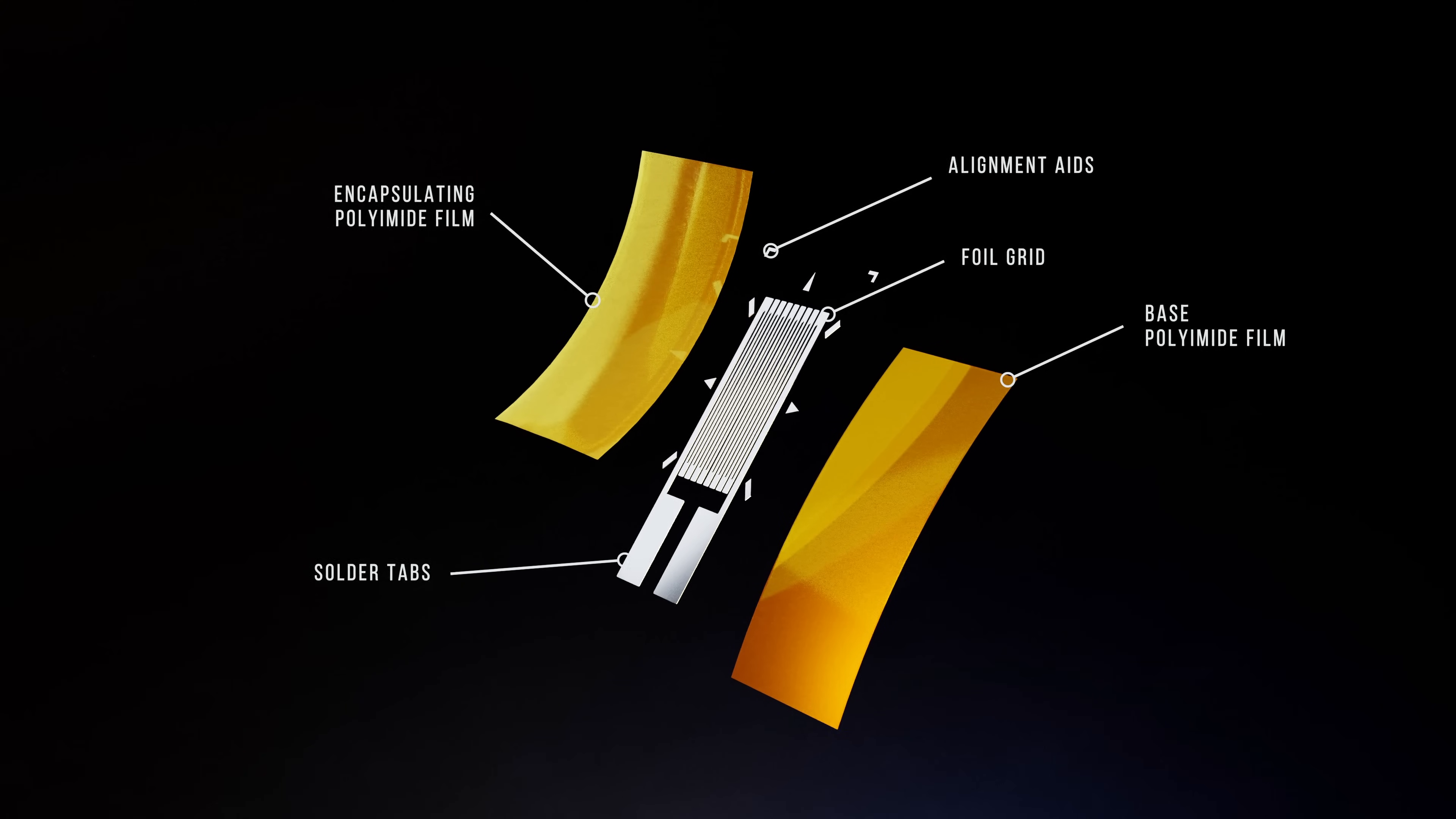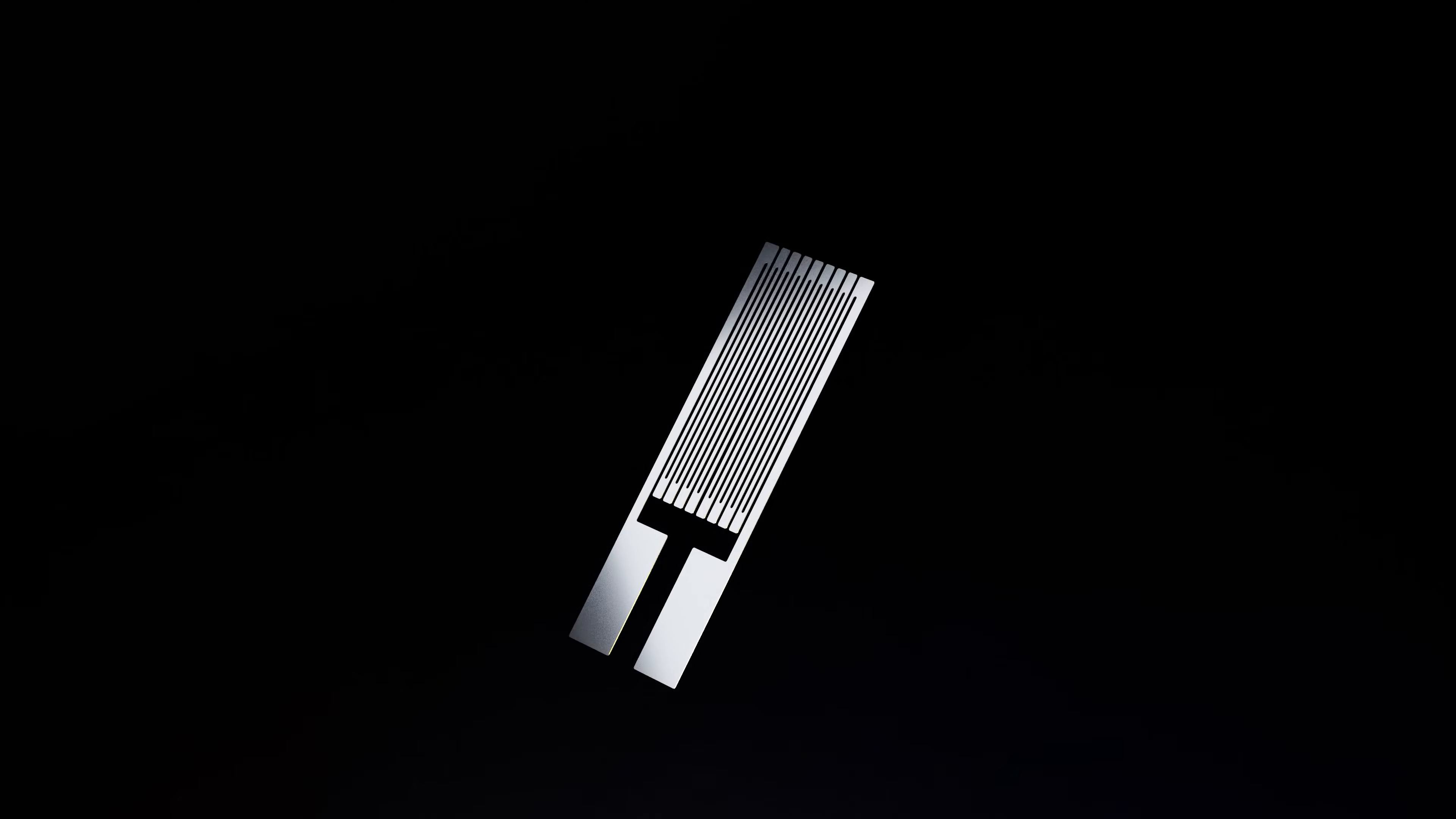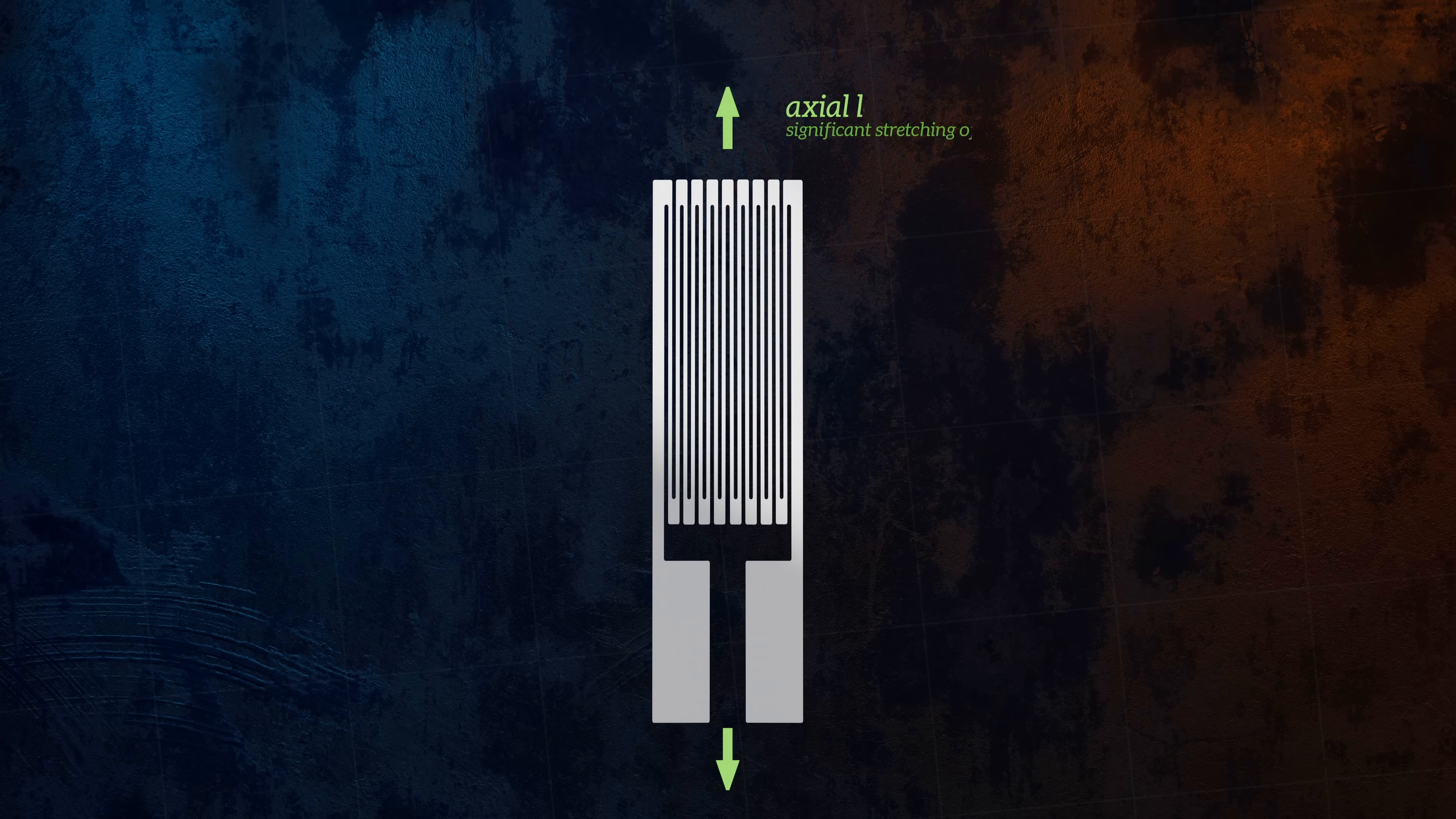The foil grid is where all of the smart stuff happens. It's made from a conductive material that's formed into an intricate pattern using a photo etching process. The pattern is cleverly designed to maximize the amount of material that's stretched or compressed when loads are applied in the axial direction, while at the same time minimizing any stretching or compression of the material when loads are applied in the transverse direction.